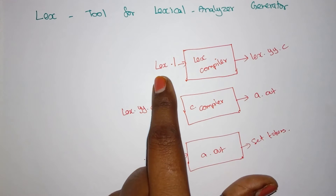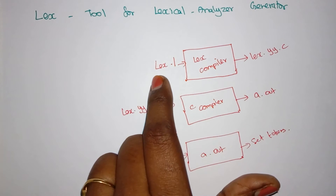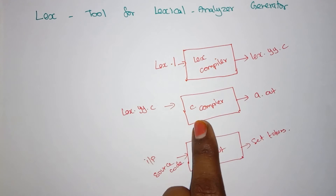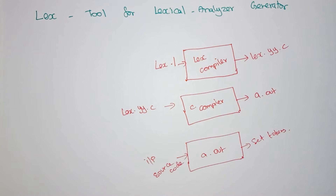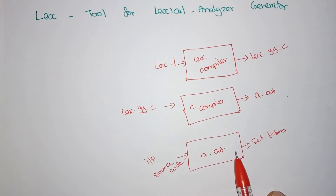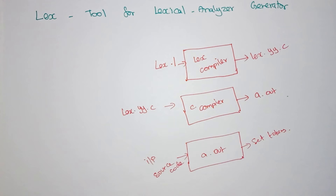The output will be a set of tokens. So this is how the execution of a LEX compiler works: the rules or patterns written as regular expressions in LEX language are fed into the LEX compiler, which converts the code into a C program. This is then fed into a normal C compiler, which checks for errors and returns the object file. When the object file is executed, the input is the source code of any programming language and the output is the corresponding set of tokens.